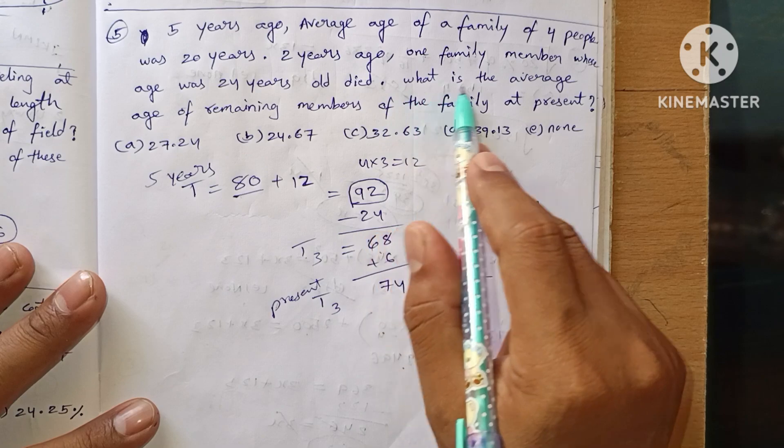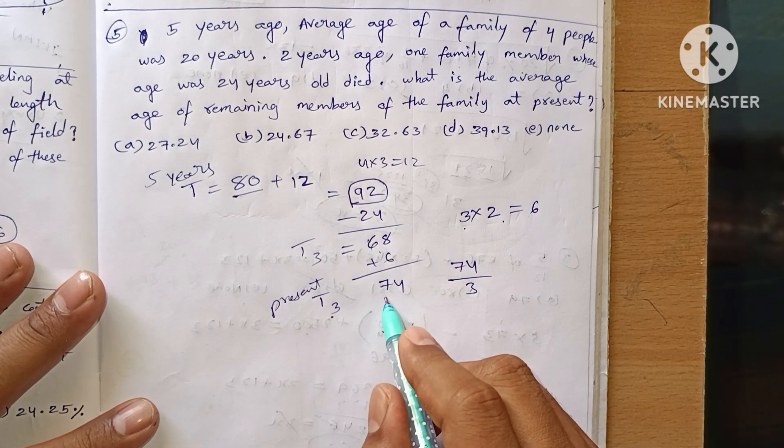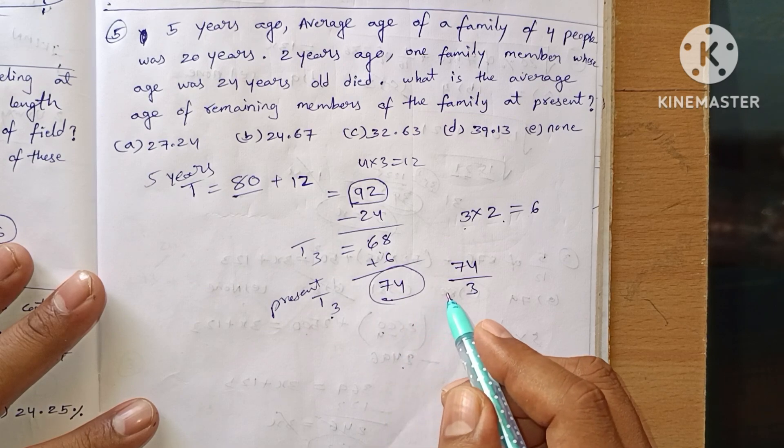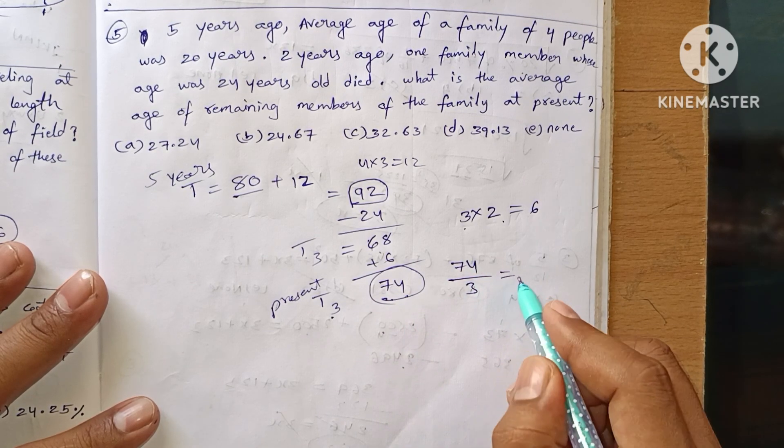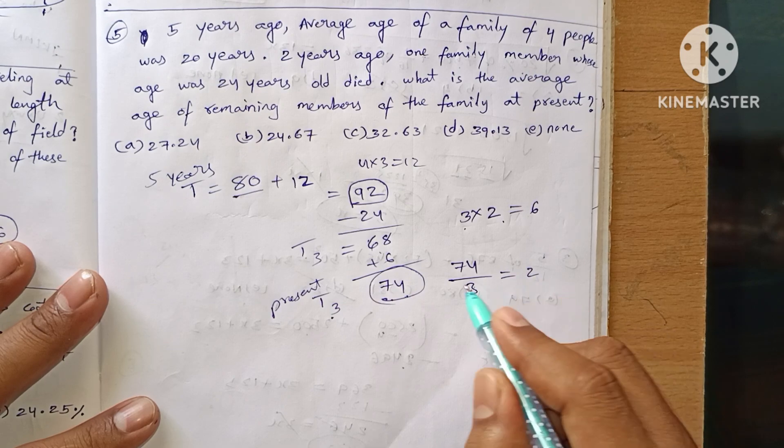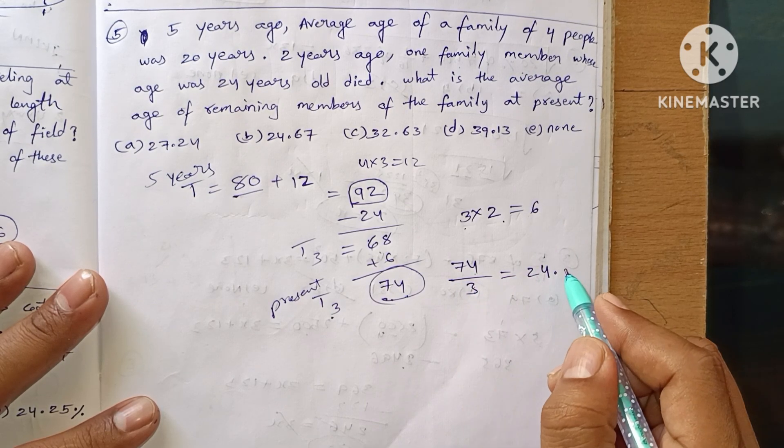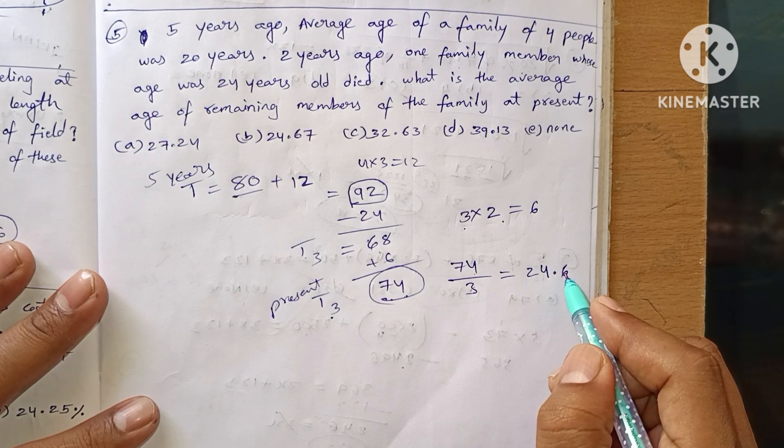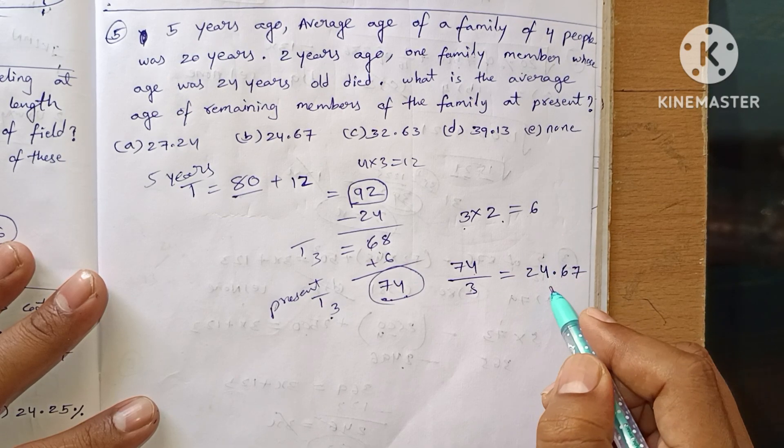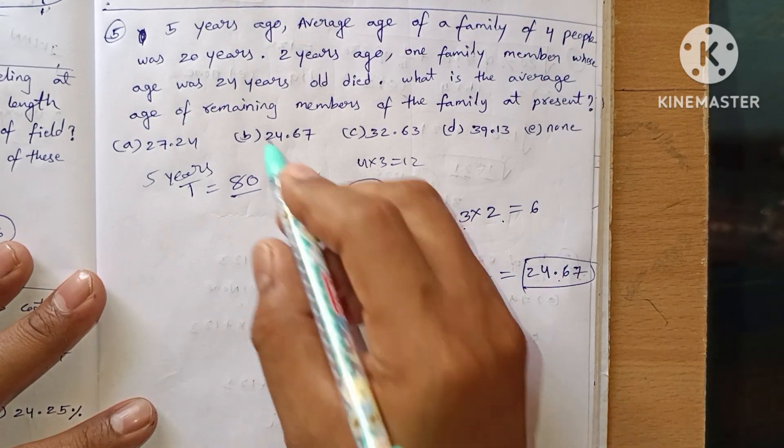The present total is 74. We need to calculate the average of the remaining family members. 74 divided by 3 equals approximately 24.67. So our answer is 24.67, option B.